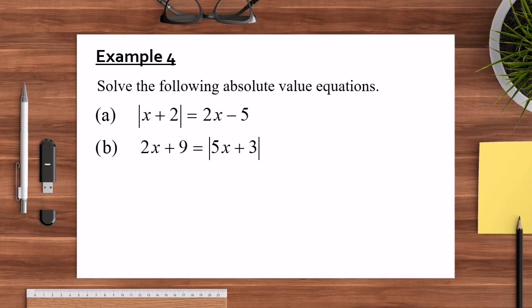Next, we continue with Example 4. Solve the following absolute value equations. Question A: |x + 2| = 2x − 5. Question B: 2x + 9 = |5x + 3|.